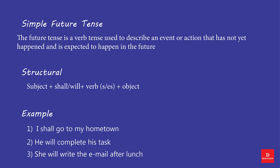Simple Future Tense. The Future Tense is a verb tense used to describe an event or action that has not yet happened and is expected to happen in the future. Structure: Subject + shall/will + Verb (base form) + Object. Examples: I shall go to my hometown. He will complete his task. She will write the email after lunch.